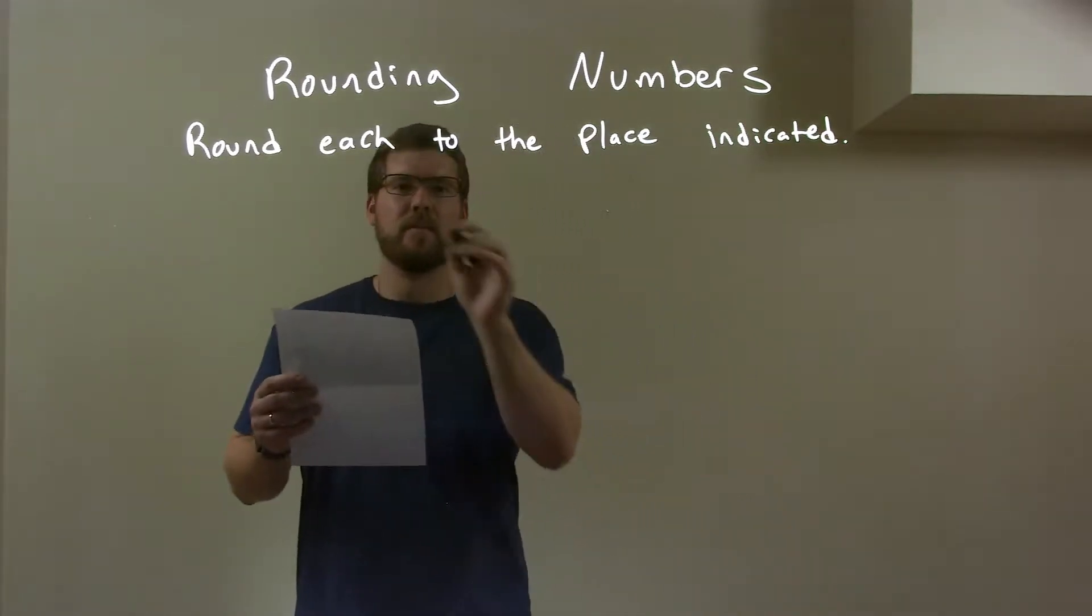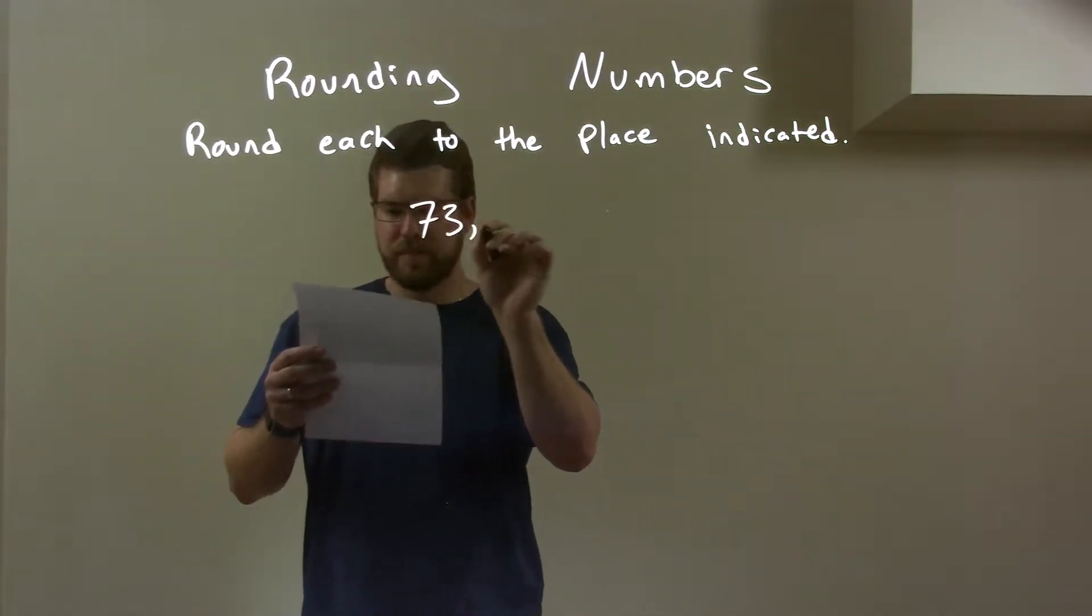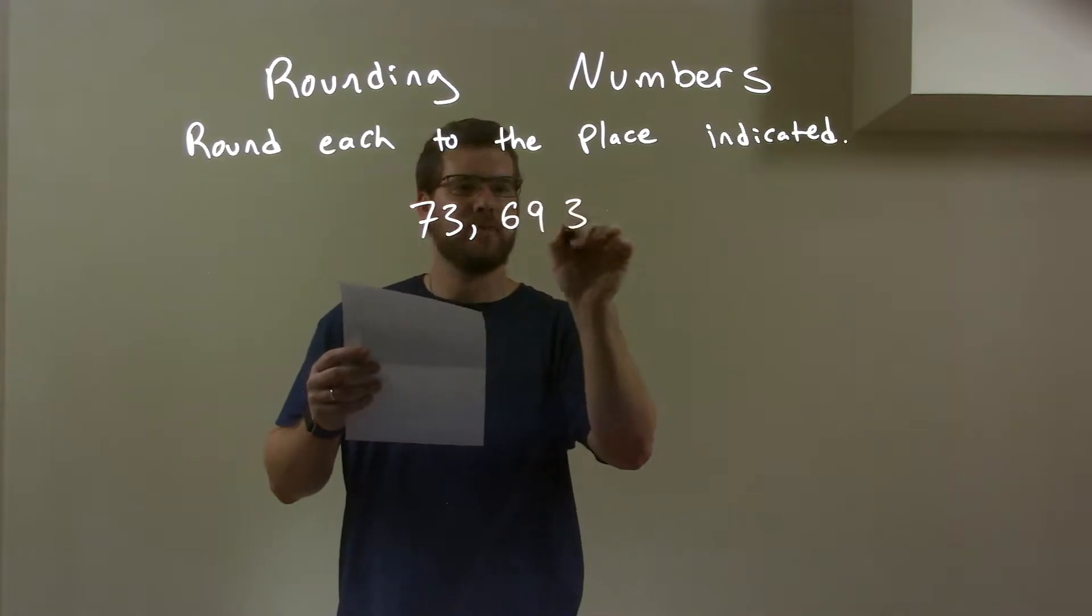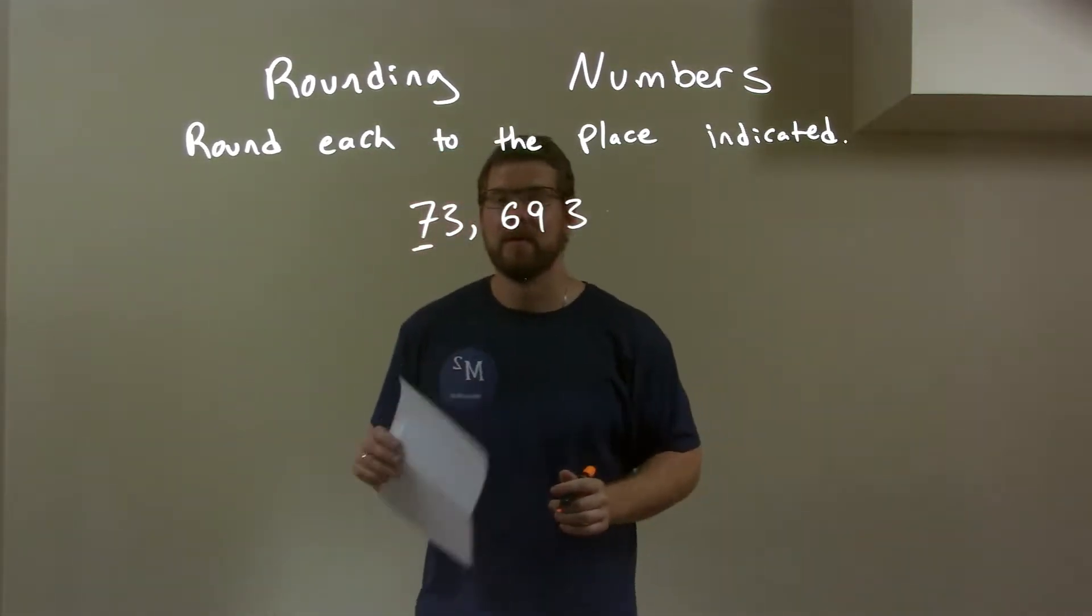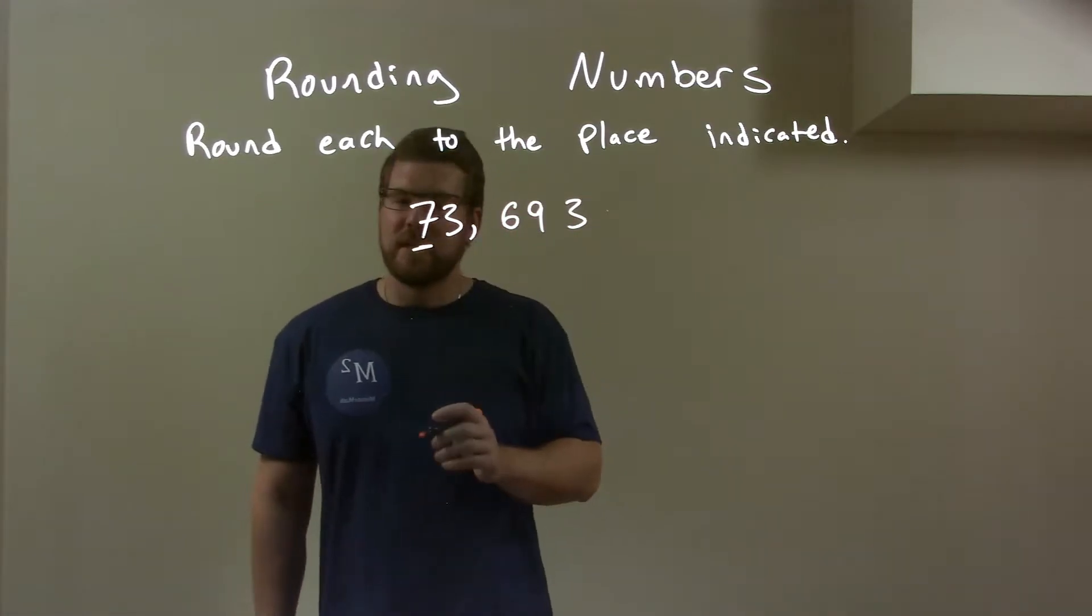If I was given this number 73,693, we're rounding on this 7. I look to the right of that 7 and I see a 3.